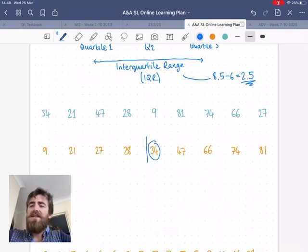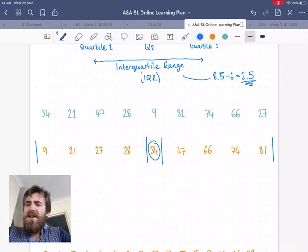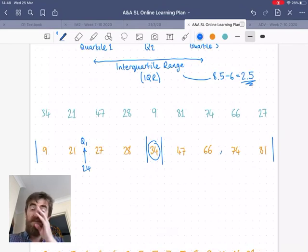Or just where the median is - that's not actually important what the median is. We're going to split it up either side of that median, so we have those four numbers to the left of it and four numbers to the right of it. Then our Q1 will be halfway between 21 and 27, so 24. And quartile three is halfway between 66 and 74, so 70.